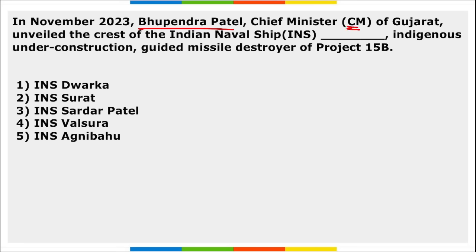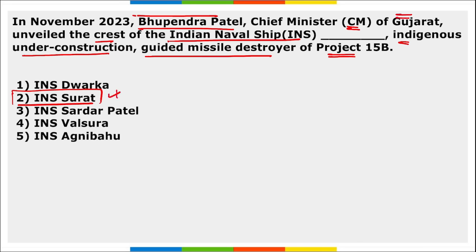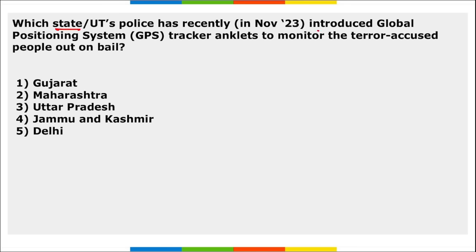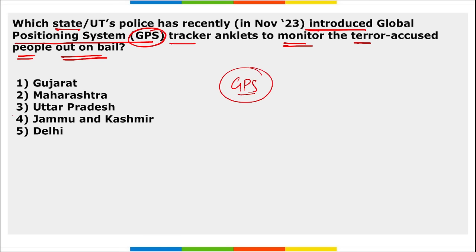Bhupendra Patel, Chief Minister of Gujarat, unveiled the crest of the Indian Naval Ship Surat — an indigenously built, under-construction guided missile destroyer of Project 15B. Next: Jammu and Kashmir Police recently introduced GPS tracker anklets to monitor terror-accused individuals out on bail, in order to maintain law and order. This device is already used in countries like USA, UK, South Africa, Australia, and New Zealand.